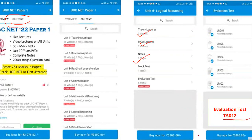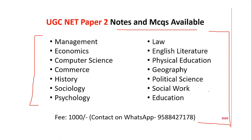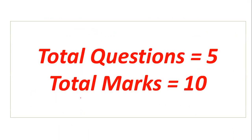Today's evaluation test code is TA012. We provide a code every day so students know which is the latest test among the many tests in the folder. For Paper 2, notes and MCQs are available for various subjects — you can see the subject list on the screen. The fees for Paper 2 is Rs. 1000. Contact us on the WhatsApp number for details.